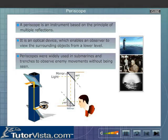A periscope is an instrument based on the principle of multiple reflections. It is an optical device which enables an observer to view the surrounding objects from a lower level. Periscopes were widely used in submarines and trenches to observe enemy movements without being seen.